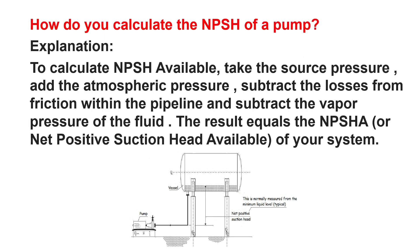How do you calculate the NPSH of a pump? To calculate NPSH available, check the source pressure, add the atmospheric pressure, subtract the losses from friction within the pipeline, and subtract the vapor pressure of the fluid. The result equals the NPSH-A, or Net Positive Suction Head Available, of your system.